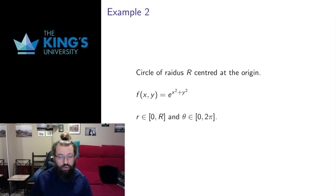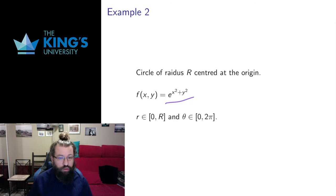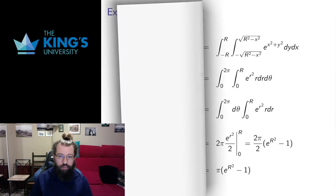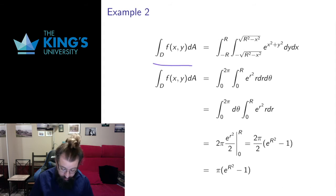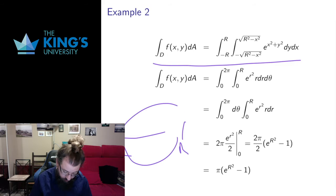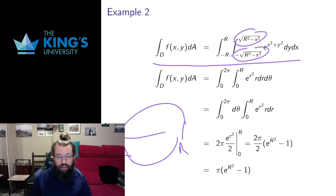Say I want to integrate over entire circles of radius capital R centered at the origin. This integrand has a kind of circular symmetry — it has an x squared plus y squared term which is going to turn into a radius squared term, giving e to the r squared. If I were to set up this integral in Cartesian coordinates, it would look pretty miserable. I'd have to go from negative R to R, and the bounds would involve the lower and upper arcs of the circle, which are nasty bounds to include.